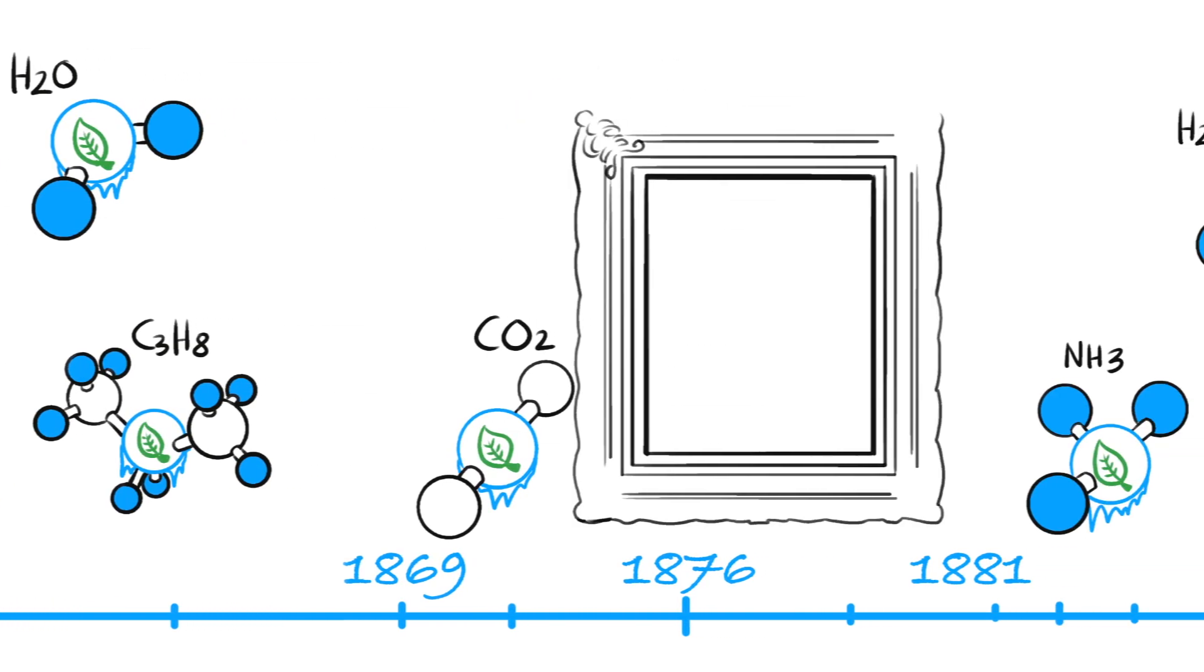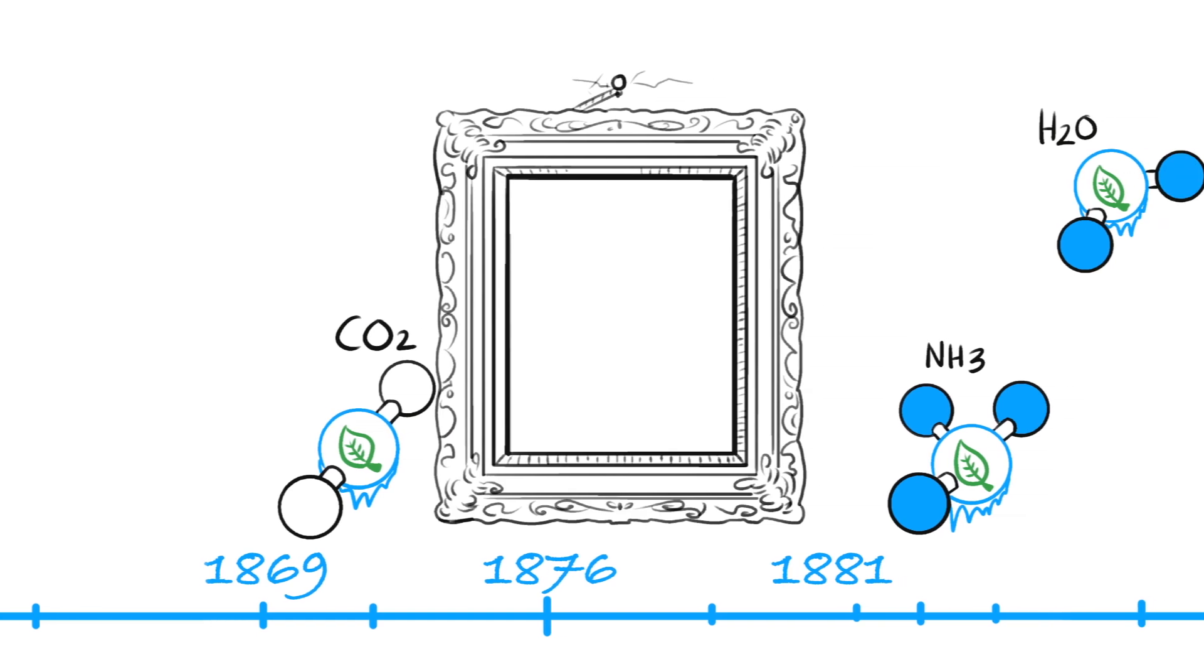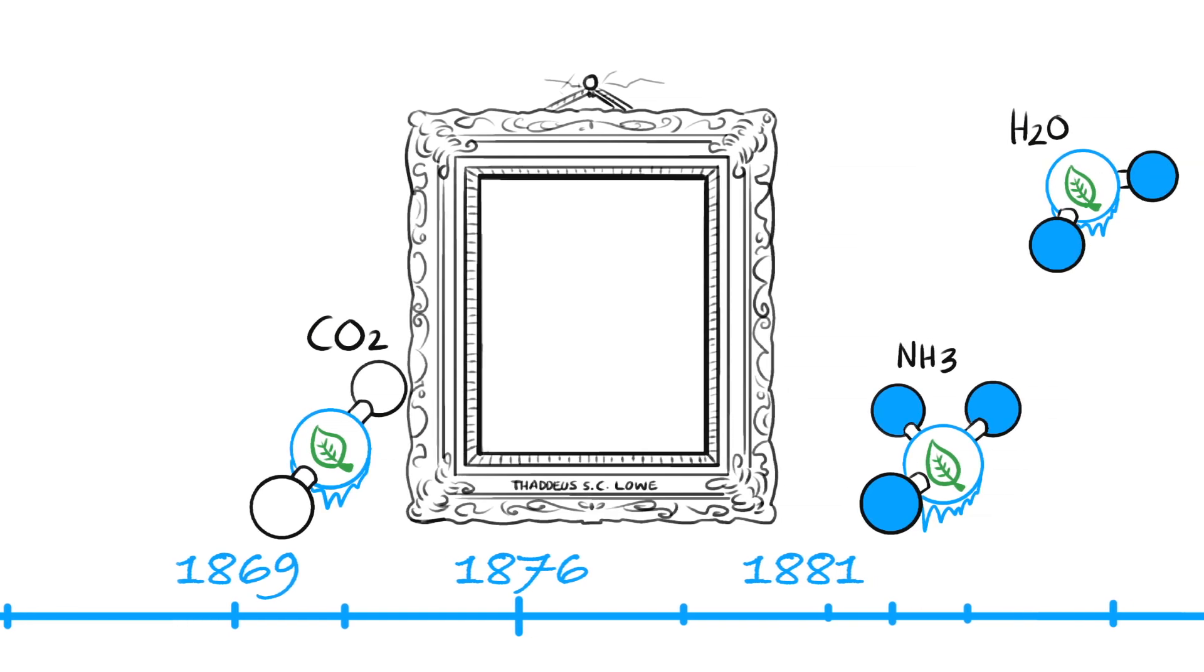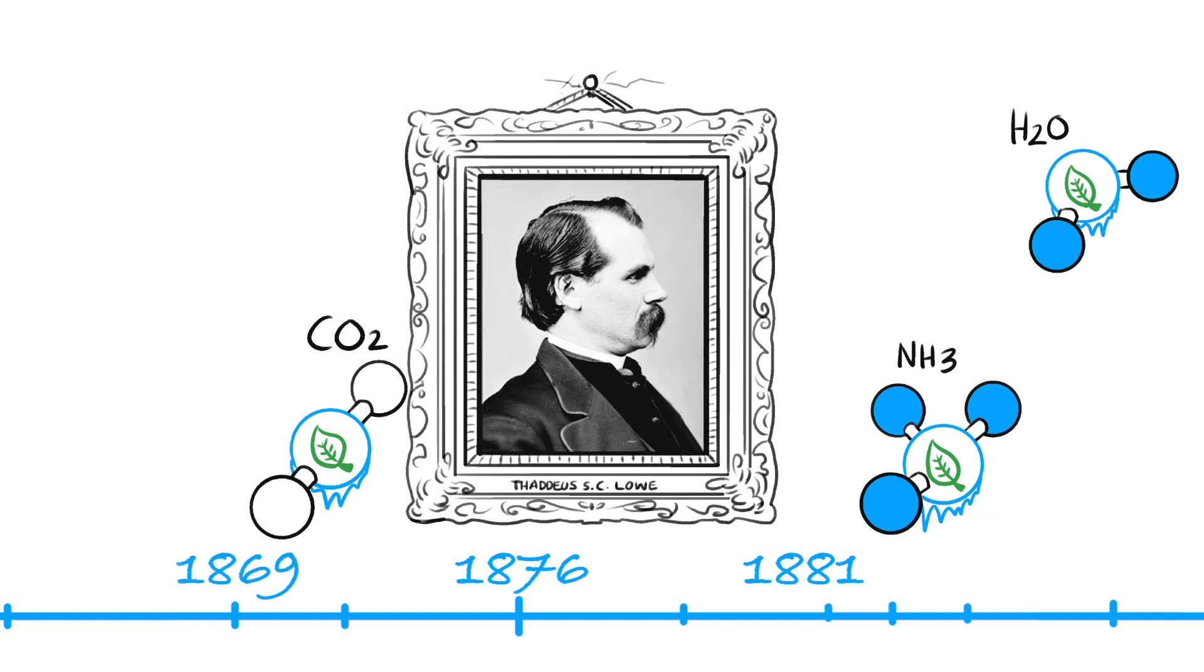So when did refrigeration as we know it today begin? In 1869, the American Thaddeus S.C. Lowe built the first refrigerating plant working with CO2 in Jackson, Missouri.